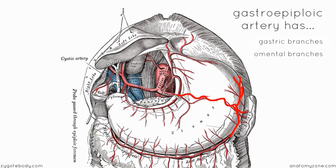Remember, you've got the little pancreatic branches here given off to the neck, body and tail of the pancreas. You can see the left gastroepiploic artery running across here and the gastric branches supplying both surfaces of the stomach. And you've got these vessels here which descend and supply the greater omentum.